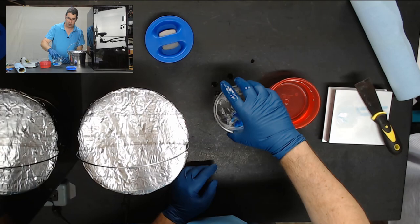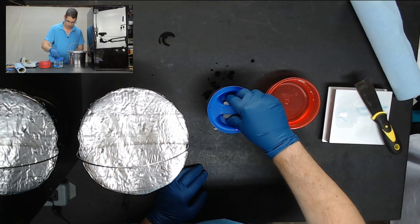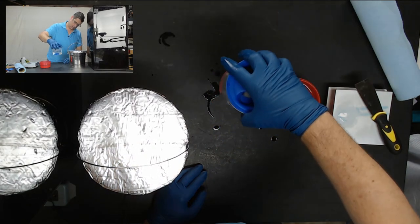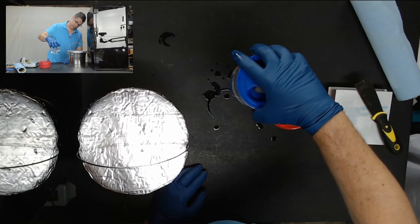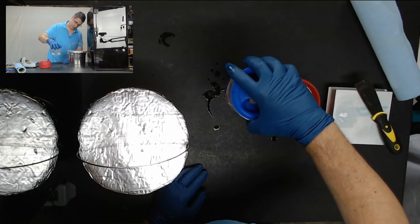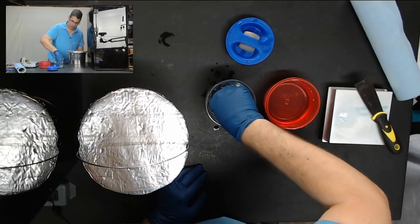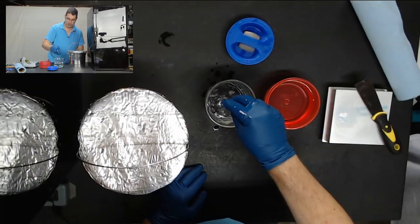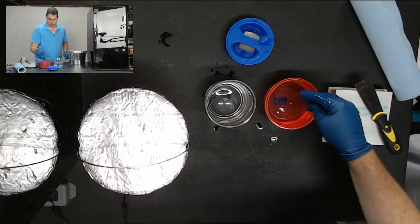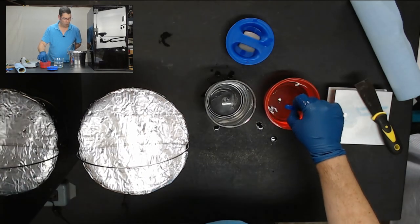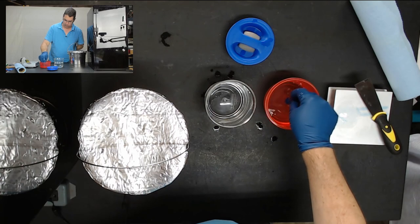We're going to agitate it for about 30 seconds. We're going to go ahead and pull it out of there, and then we're going to dunk it in the water. You're going to start seeing some of the resin washing off of it there, and the water is going to get a little bit milky.